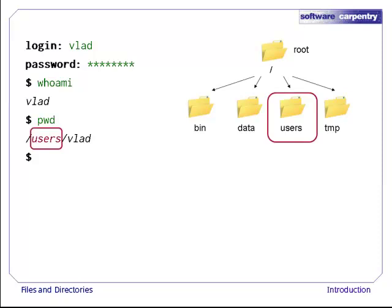We know that our current working directory, slash users slash vlad, is stored inside slash users, because slash users is the first part of its name. Similarly, we know that slash users is stored inside the root directory slash, because its name begins with slash.